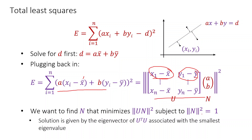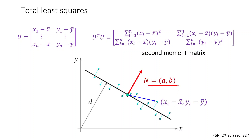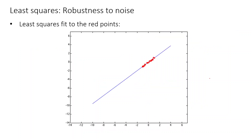The solution is given by the eigenvector of UᵀU associated with the smallest eigenvalue. One method is to use this eigenvector approach; otherwise you can do constrained minimization using scipy.optimize.minimize in Python's scipy library, adding the constraint a² + b² = 1. This matrix UᵀU is called the second moment matrix. The vector n gives (a, b) and the distances follow from that.